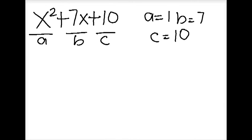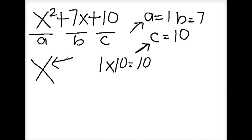In order to factor this polynomial, you have to use the diamond method. On the top of the diamond, you multiply what A and C equal. So 1 times 10 equals 10. You're going to write 10 on the top of the diamond.